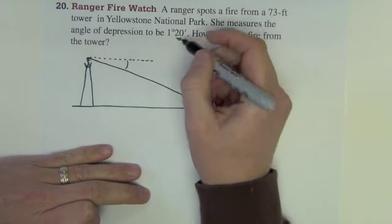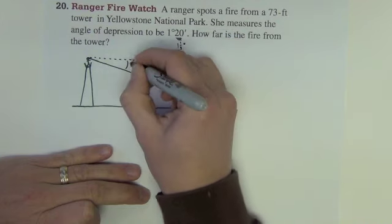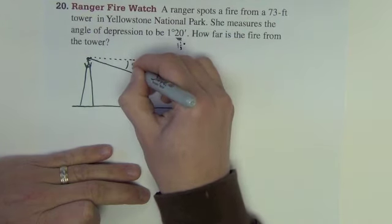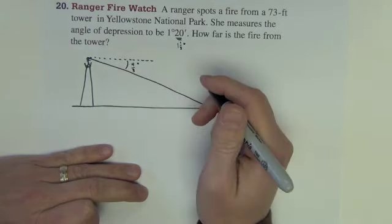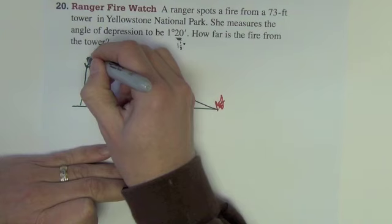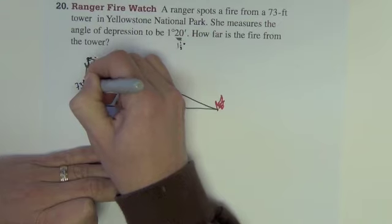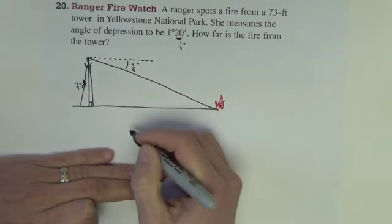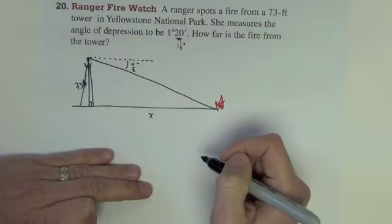20 minutes is 1 third of an hour. This would be like 1 and 1 third degrees. In other words, this is 4 thirds degrees. I don't want to use decimals when I have to round the decimals, so we'll just keep it as a fraction. I know that the tower here that she's on top of is 73 feet. The question is, how far is the tower from the fire? What's that distance?